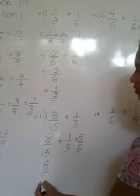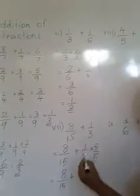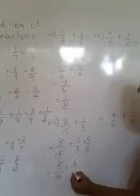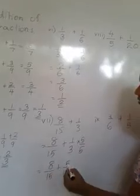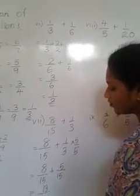8, 15, same way we must write. After that 1 times 5 is 5. 3 times 5 is 15. 8 added 5 is 13, 15.